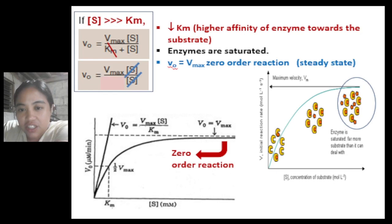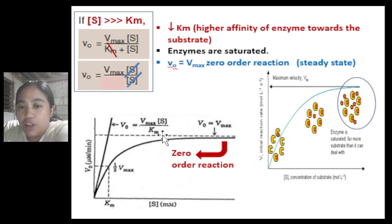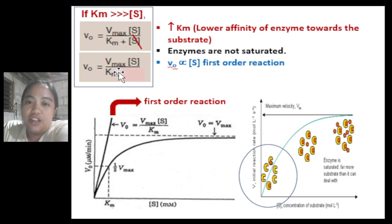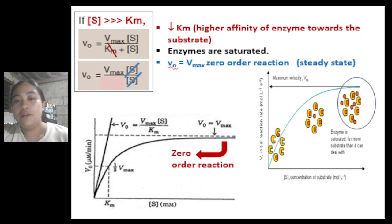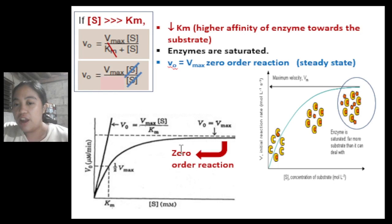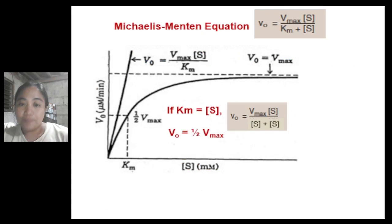The steady state is the condition in which the concentration of the enzyme-substrate complex remains constant despite continuous turnover. To summarize: if Km is larger than substrate concentration, initial velocity is directly proportional to substrate concentration — first-order reaction. But if substrate concentration is very large, enzymes are saturated, and initial velocity equals maximum velocity — giving us the steady state or zero-order reaction, demonstrated by the leveling off of the curve.